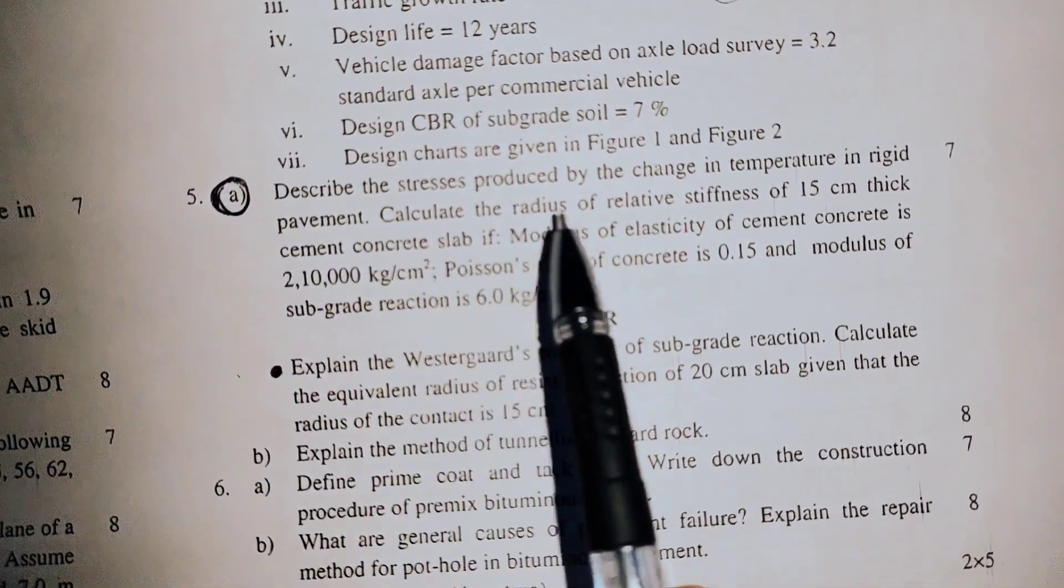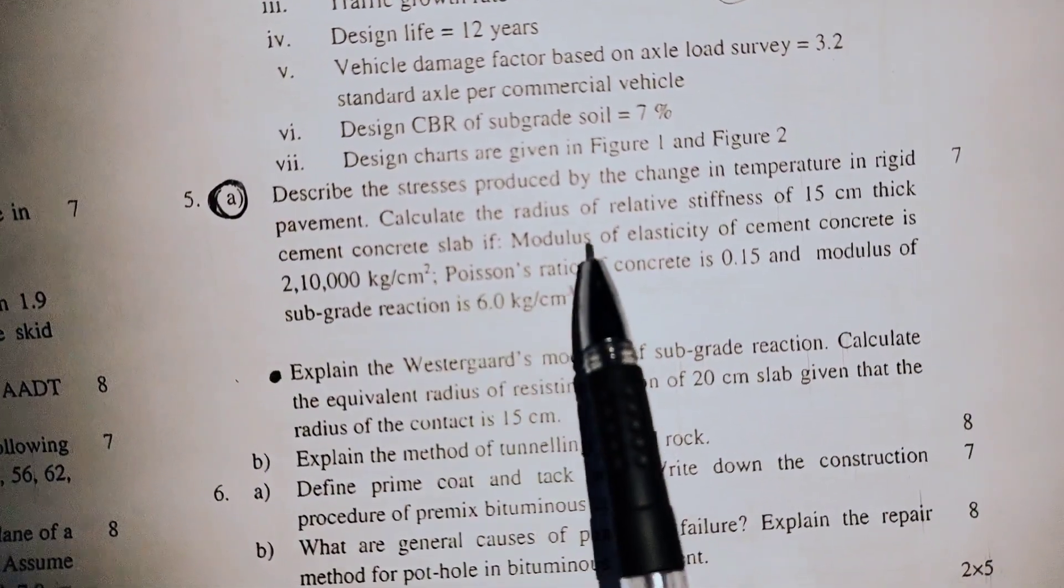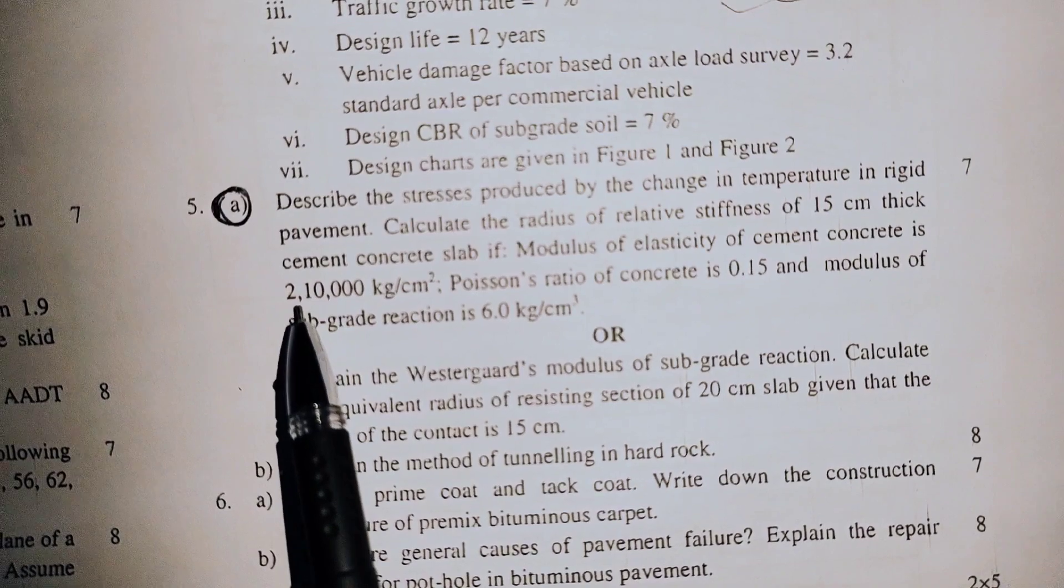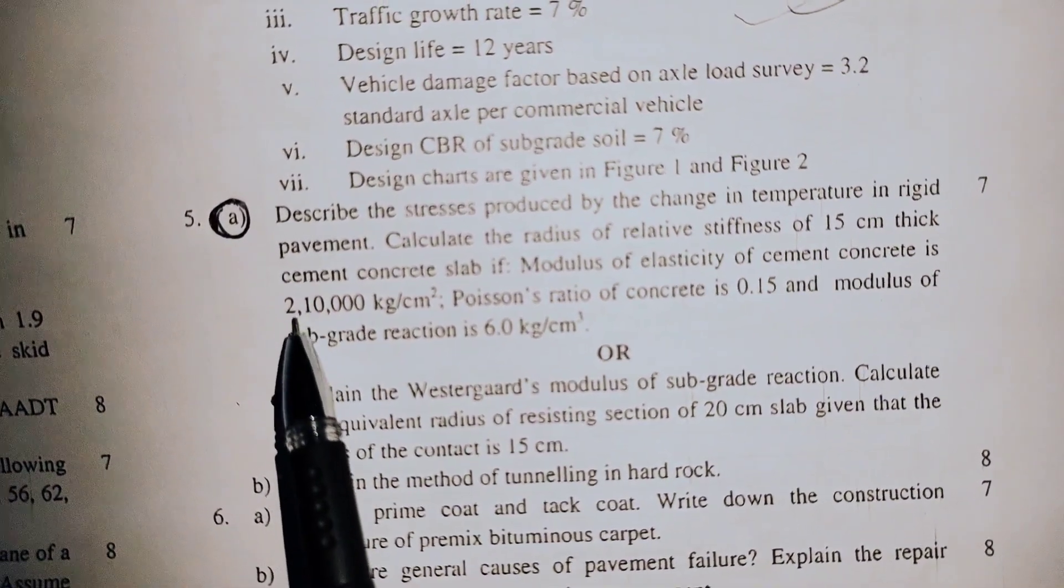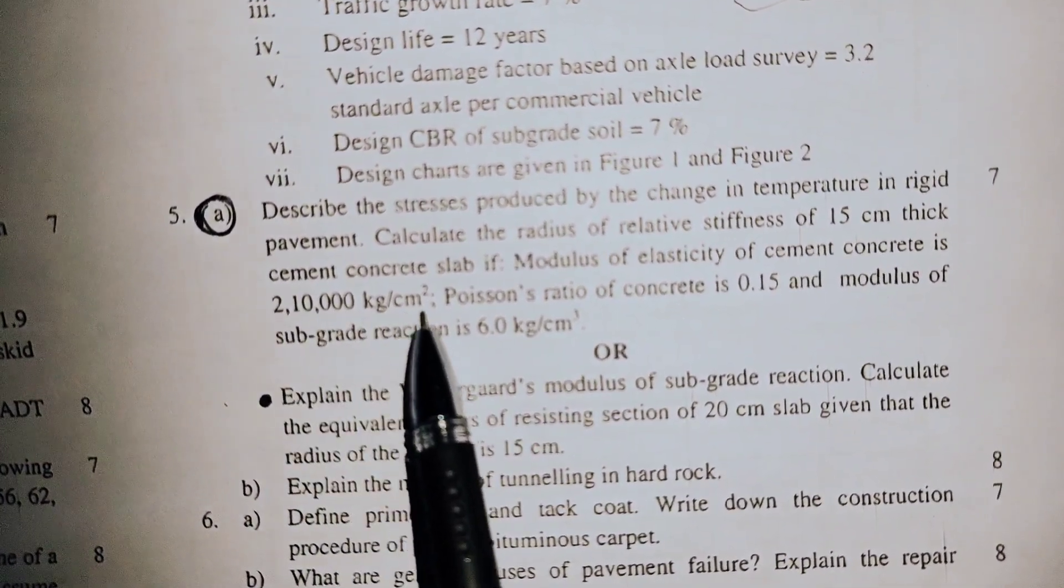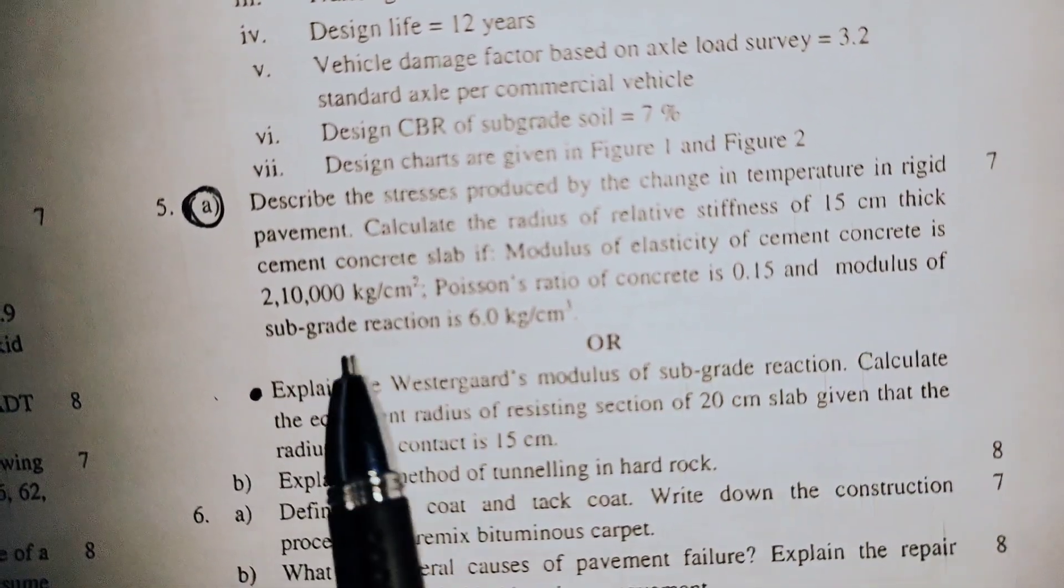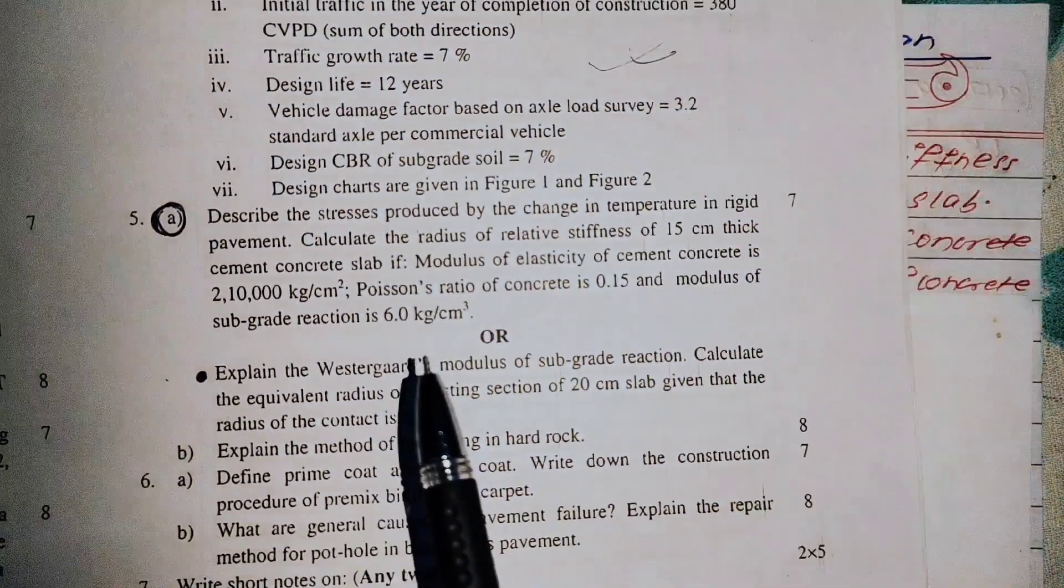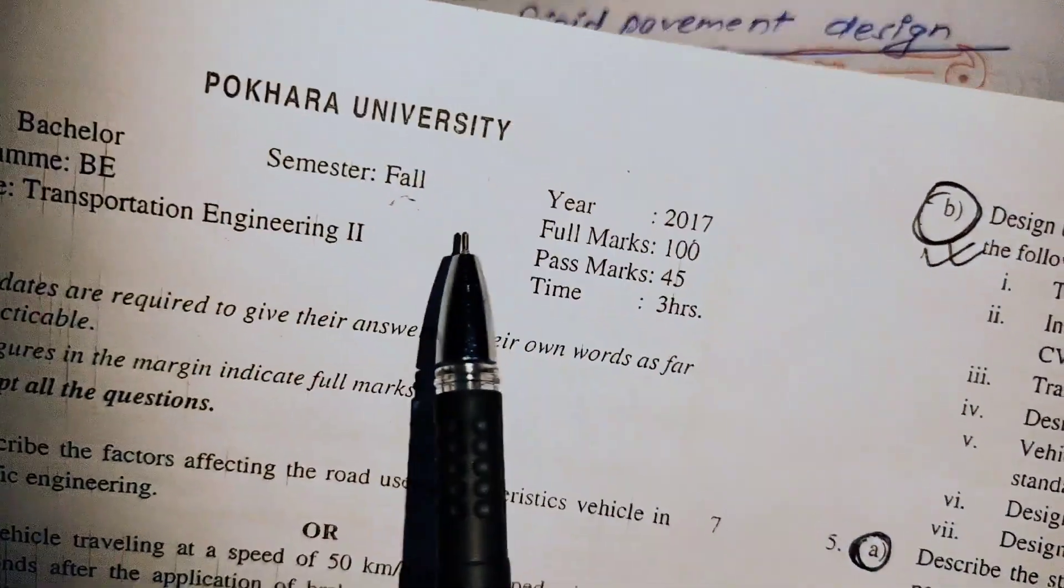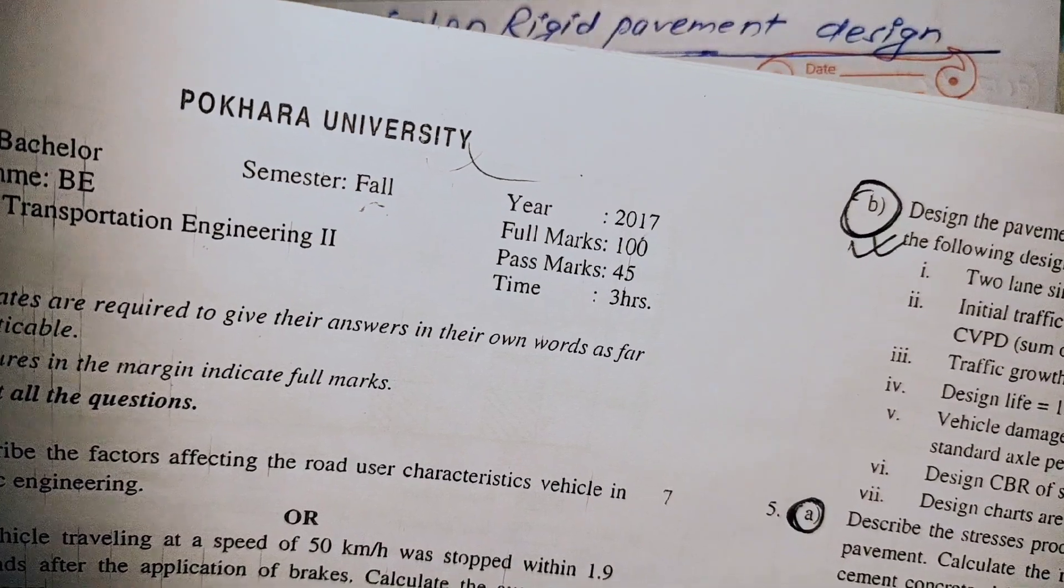The numerical problem is: Calculate the radius of relative stiffness of a 15 centimeter thick cement concrete slab if modulus of elasticity of cement concrete is 2.1×10⁵ kg/cm², Poisson's ratio is 0.15, and modulus of subgrade reaction is 6 kg/cm³. This question appeared in Pokhara University 2017 Fall and also in 2072.